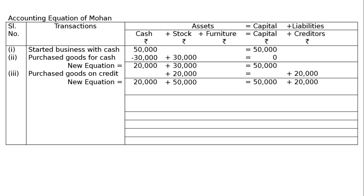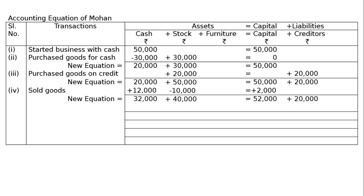Fourth transaction: sold goods costing 10,000 for 12,000. Cash will increase by 12,000. From stock, 10,000 cost of goods will be deducted and 12,000 added to cash. There is a profit of 2,000. Profit increases capital, so 2,000 will be added to capital. New equation: 32,000 plus 40,000 equals 52,000 plus 20,000.